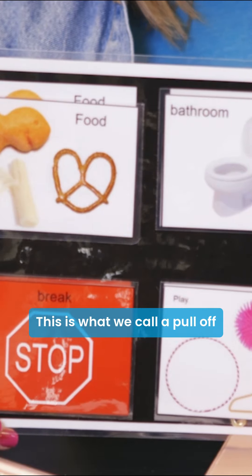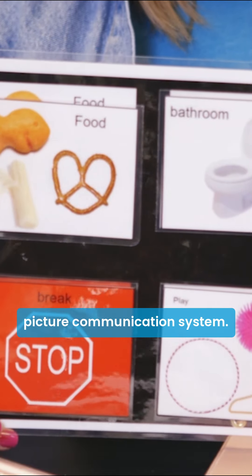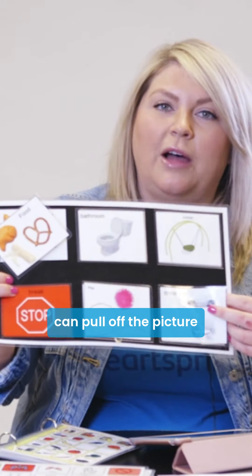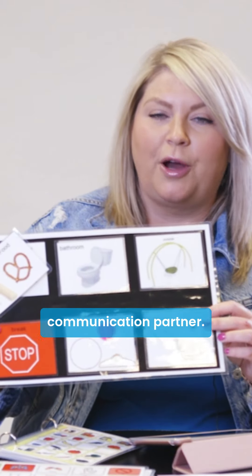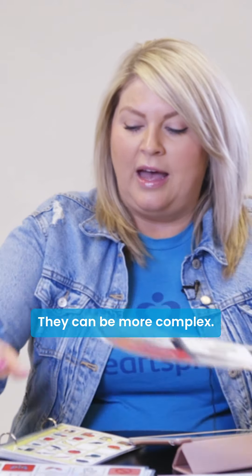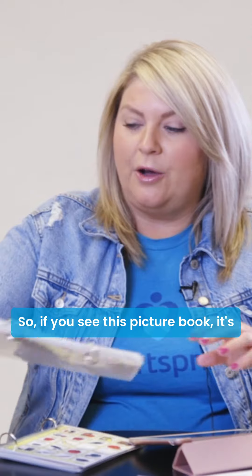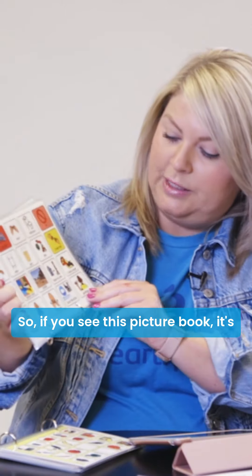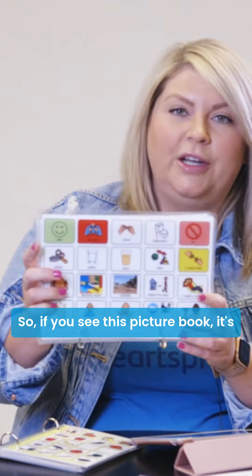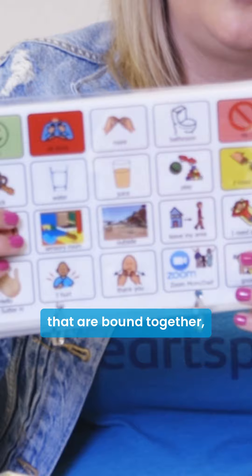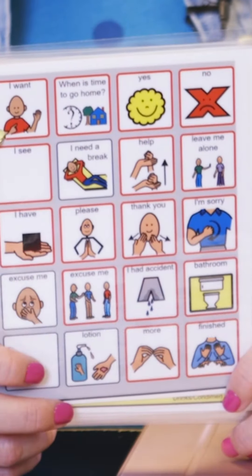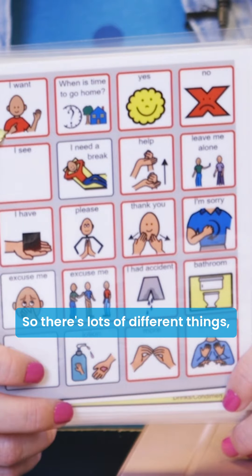This is what we call a pull-off picture communication system, where students or clients can pull off the picture and hand it to their communication partner. They can be more complex — like this picture book, which is made up of different pictures that are bound together. There are lots of different types of no-tech systems.